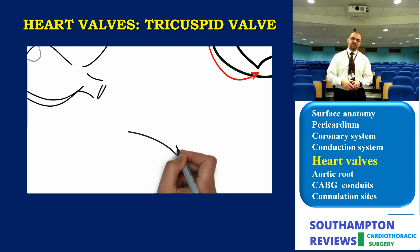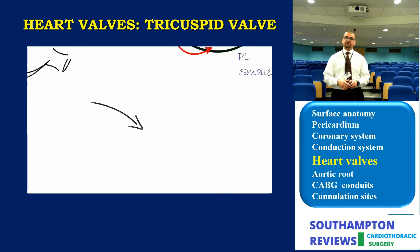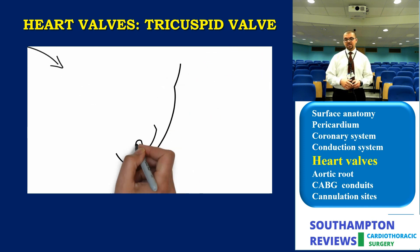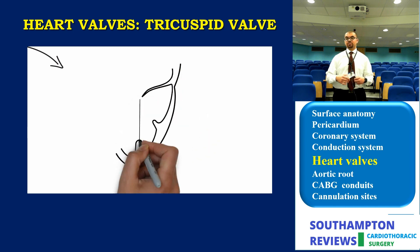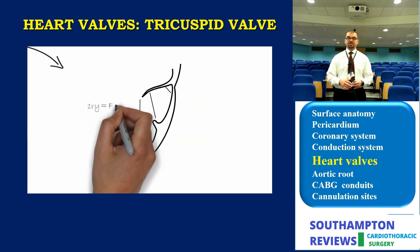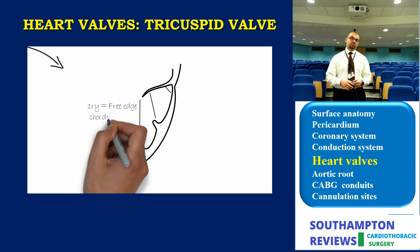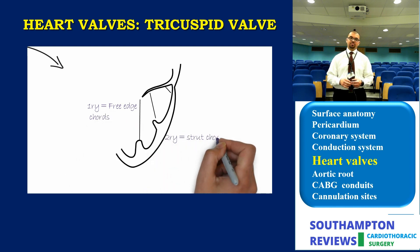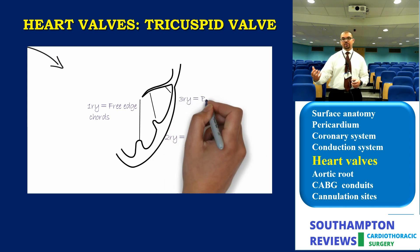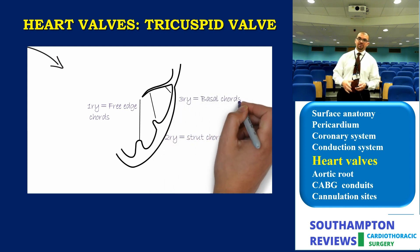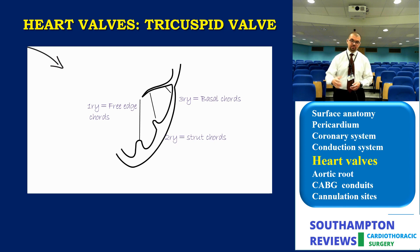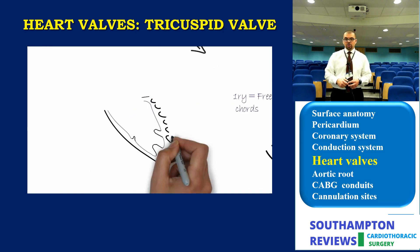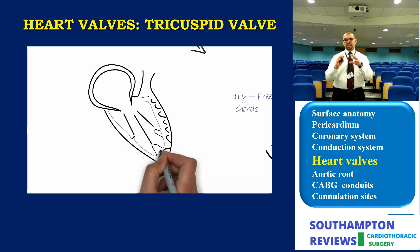Next is the subvalvular apparatus of the tricuspid valve. The same applies as for the mitral valve: three levels of cords — primary cord responsible for preventing prolapse and flail leaflet, secondary cord (strut cord) responsible for preventing billowing, and the tertiary cord which allows the right ventricle access to a fixed point in order to create forcible contraction.